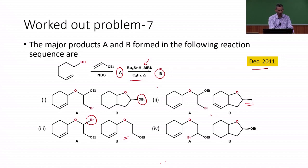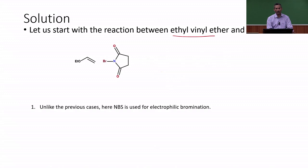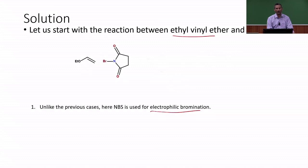We are going to find out how the reaction actually proceeds. The reaction between ethyl vinyl ether and N-bromosuccinimide (NBS) — one major difference from previous NBS reactions is that here NBS acts as an electrophilic bromination agent, not a radical source. In radical reactions, allylic or benzylic positions are required. Here we do not have an allylic or benzylic position, so NBS functions only for electrophilic bromination.